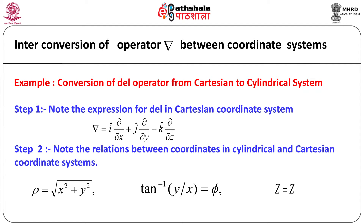We have discussed different concepts like divergence, gradient, and curl, which involve the use of del, and we have seen that the expressions for del are different in different coordinate systems. The question arises: how to convert the operator del from one coordinate system to another? Let us see the procedural steps for interconversion of del operator from Cartesian to cylindrical system as an example.